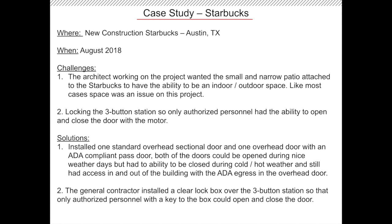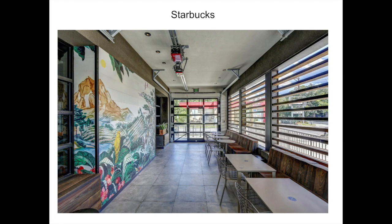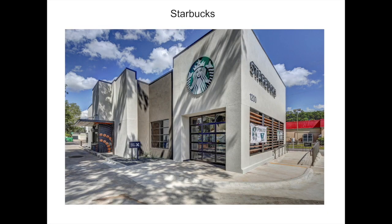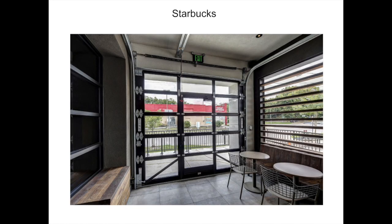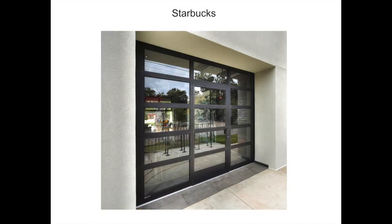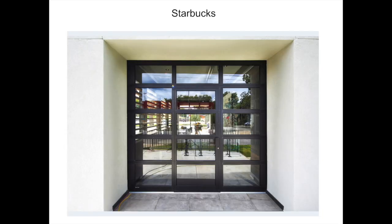The last case study is a new construction Starbucks in Austin, Texas in August 2018. This Starbucks had an indoor-outdoor patio incorporated into it. The architect wanted overhead sectional doors to open up the patio on nice weather days, but code required an ADA compliant entrance door. The patio space was long and narrow, leaving virtually no room for an additional entry door. A standard overhead sectional door was installed on one end and the other end incorporated the overhead sectional door with a pass door. The general contractor installed a clear lock box over the three-button station to prevent customers from opening and closing the door.